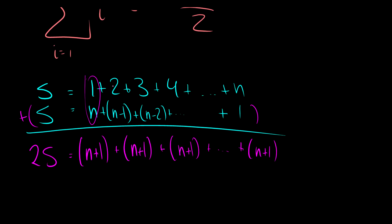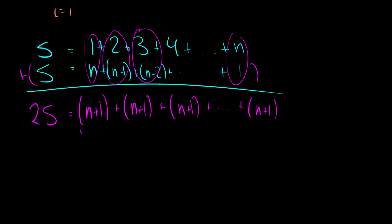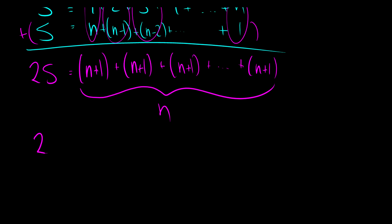So how many numbers are there? Well, there are n numbers, so this is added n times. So really, 2S is equal to n times (n+1). So that means that S is equal to n times (n+1) over 2.